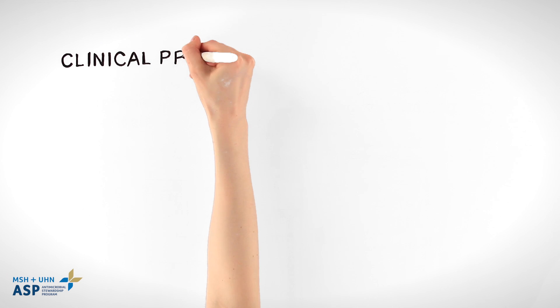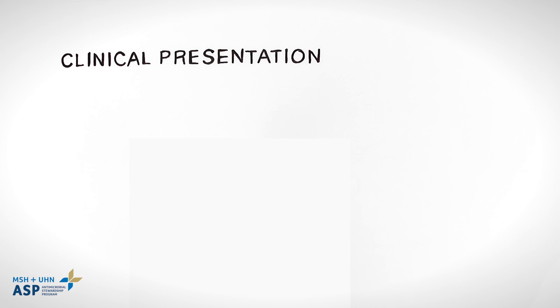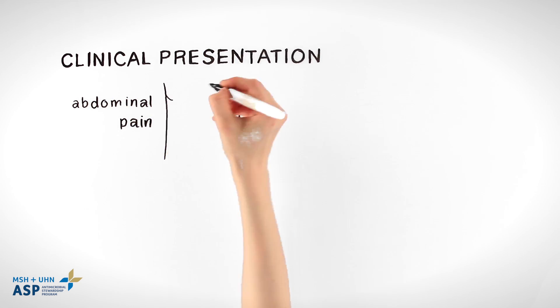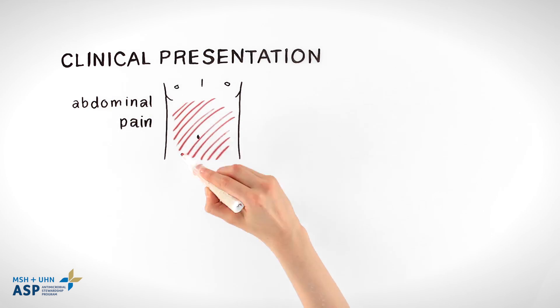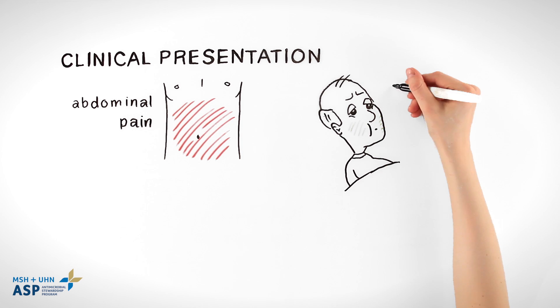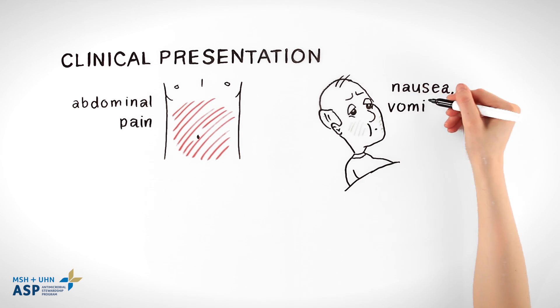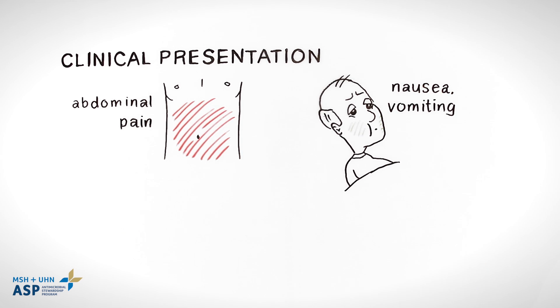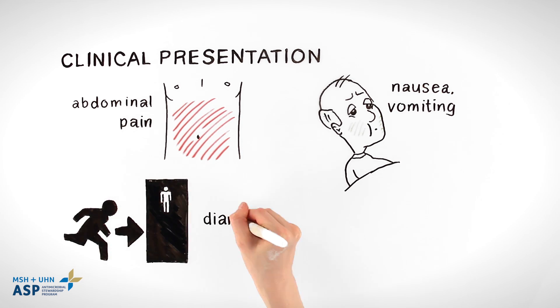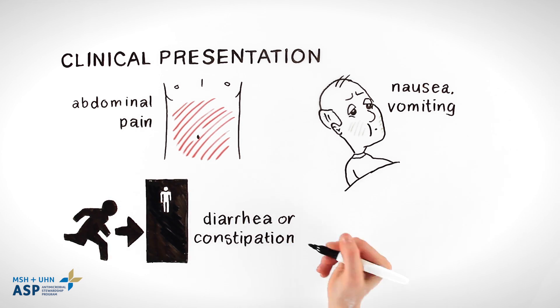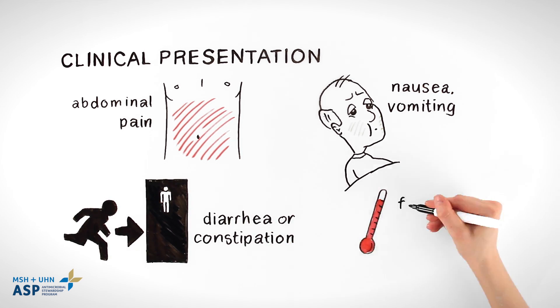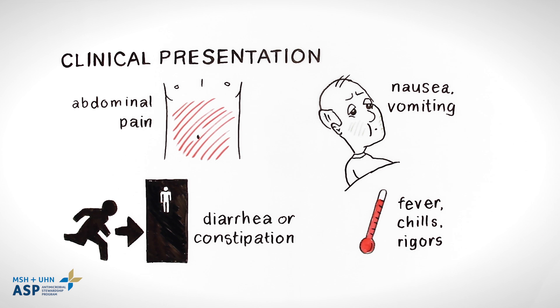Clinical presentation of secondary peritonitis includes abdominal pain with rigidity or guarding, nausea, vomiting, diarrhea or constipation, fever, chills, and rigors.